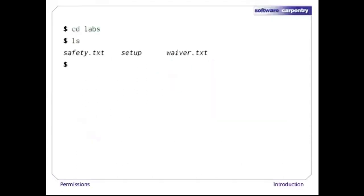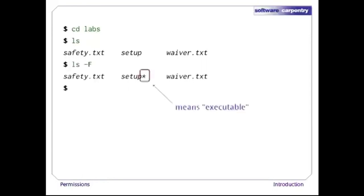If we run ls -F, it puts a star at the end of setup's name. This is its way of telling us that setup is executable, i.e., that it's a program of some kind that we can run. Now let's run the command ls -l. The -l flag tells ls to give us a long form listing.